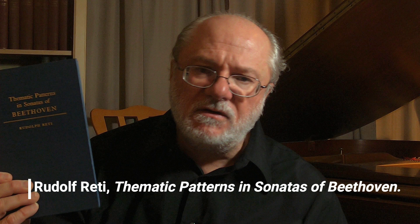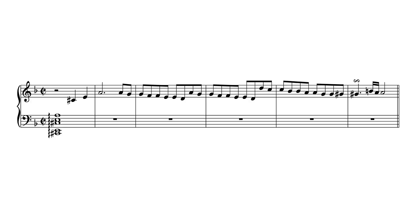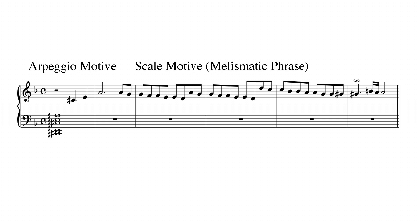Probably the person most often associated with the concept of motivic transformation is Rudolf Reddy. Reddy wrote two books on the subject: Thematic Process and Music, and Thematic Patterns and Sonatas of Beethoven. In Thematic Patterns and Sonatas of Beethoven, Reddy gives us his thoughts on the Tempest Sonata. Reddy identifies three motifs at the opening of the piece: the arpeggio, the falling eighth note scales — which he calls a melismatic phrase — and the turn pattern at the end. He shows that the melismatic pattern, the falling scale, is the basis of much of the piece.